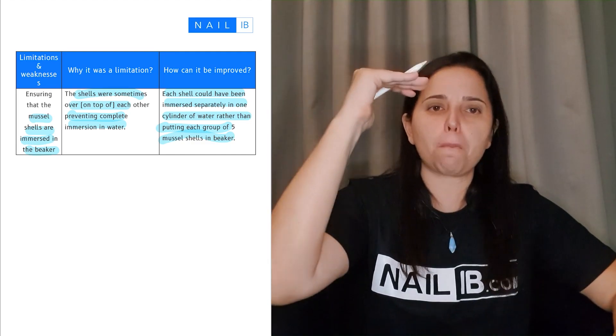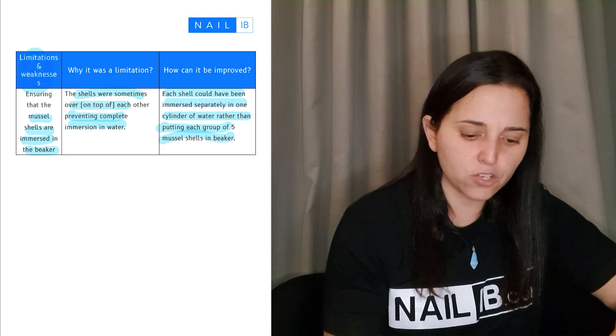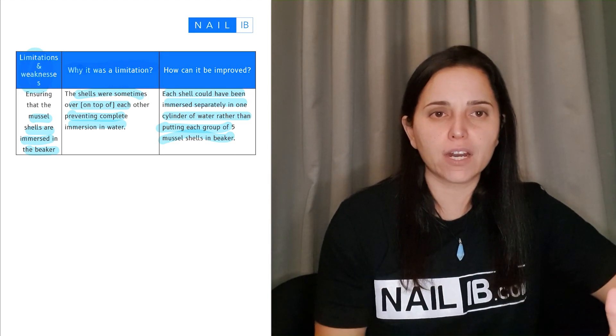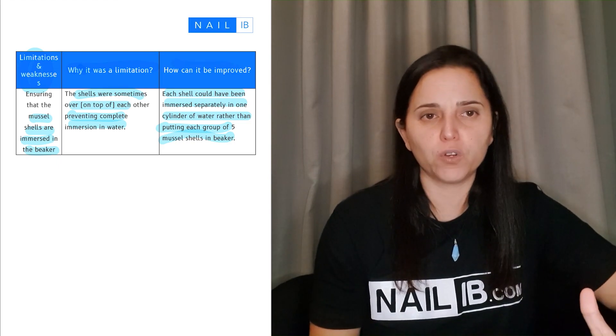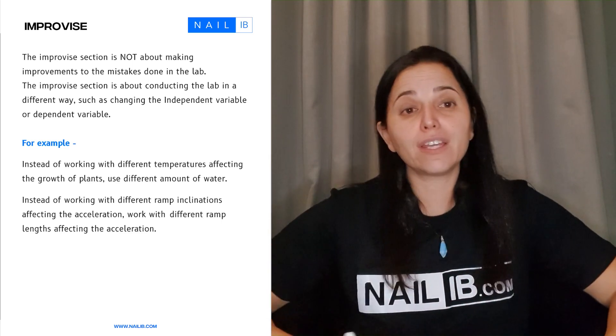This is a table that you do. You can put it as a paragraph—limitations, improving limitations. You can do as a table like I show here: you tell me the limitations, then you tell me why was that a limitation, and then how can you improve. So it can be tables or paragraphs, that's totally fine.